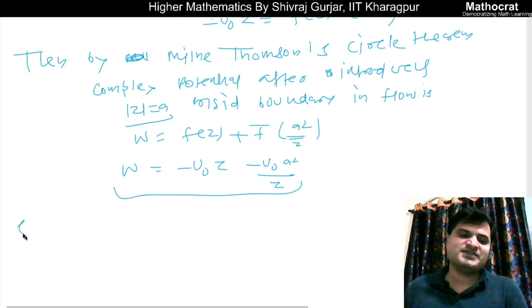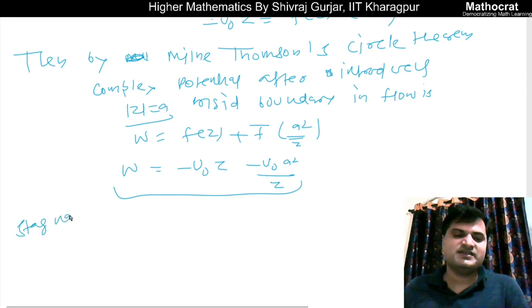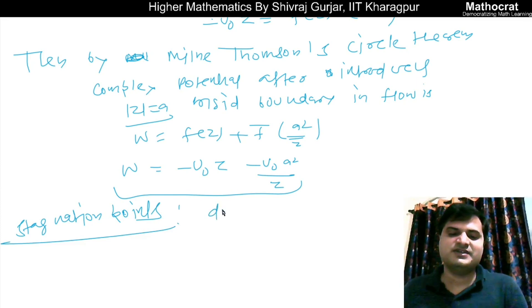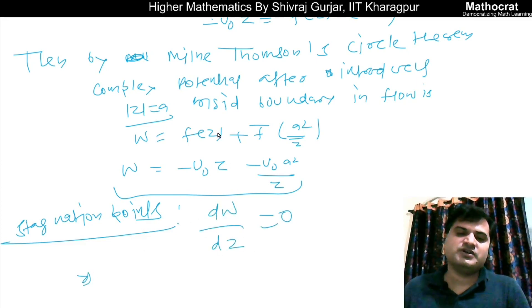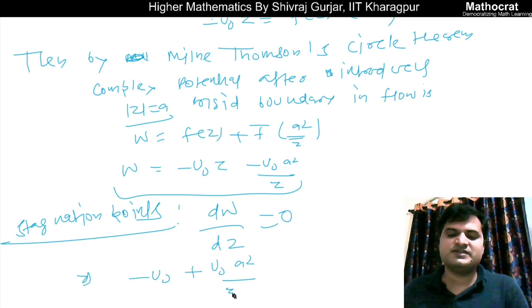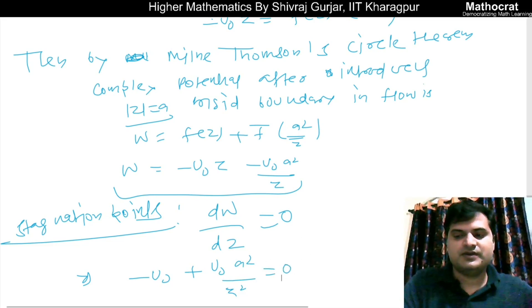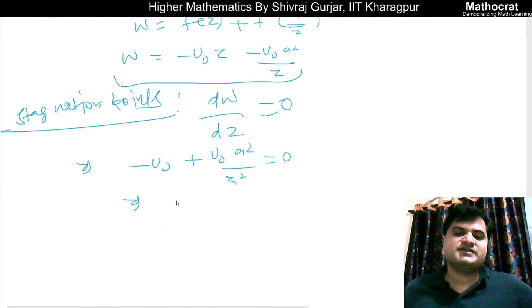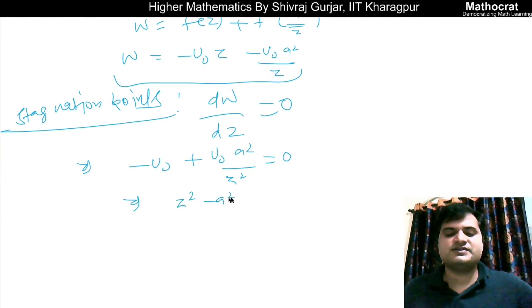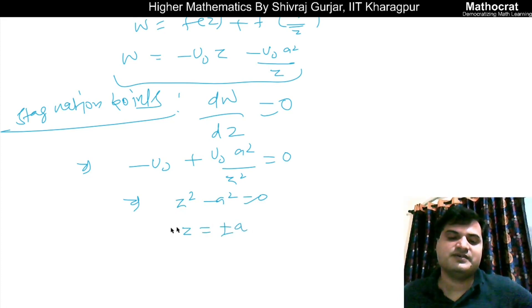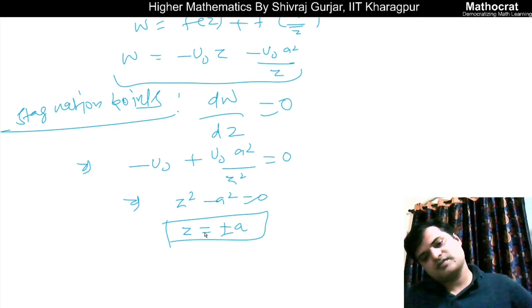Stagnation points occur when dw/dz equals zero. So dw/dz = −U-naught + U-naught · a²/z² = 0. This gives z² − a² = 0, so z = ±a. These are the stagnation points.